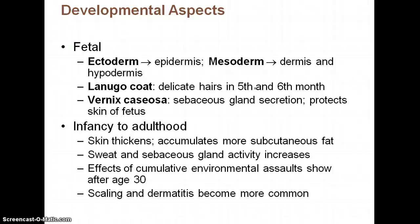Regarding the developmental aspects of the integumentary system: in the fetus, the ectoderm forms the epidermis, while the mesoderm forms the dermis and hypodermis. Lanugo refers to the fine, delicate hairs that cover the fetus around the fifth or sixth month of development. These are usually shed before birth, but premature babies may still have the lanugo coat and will shed it after birth.